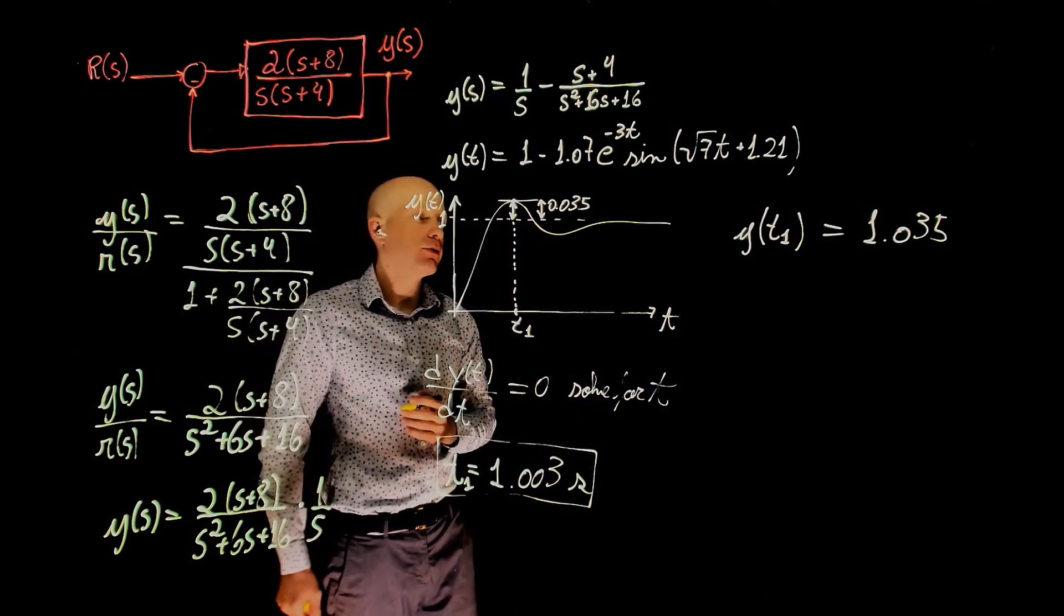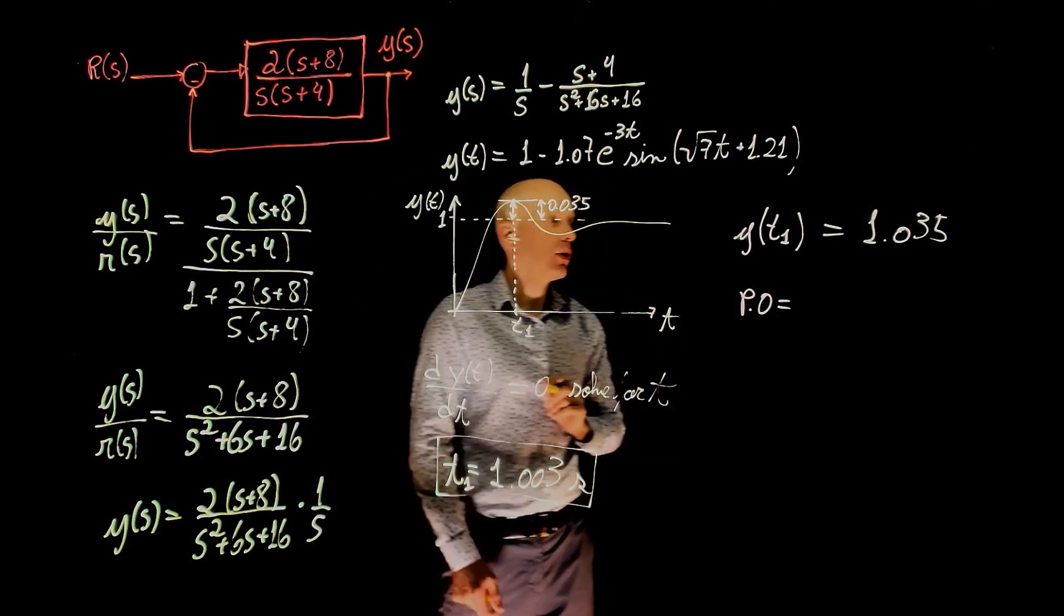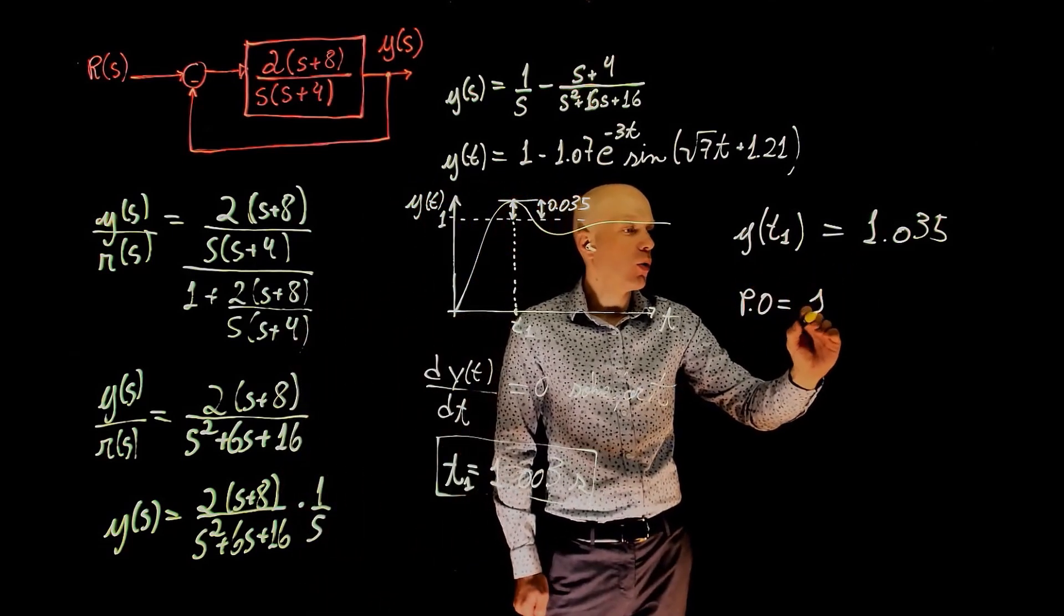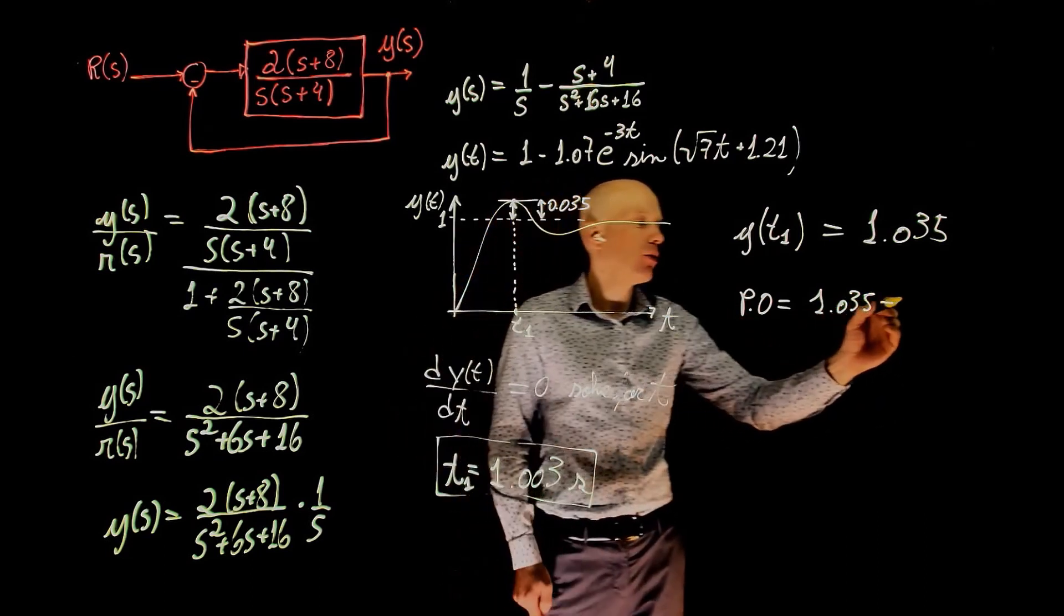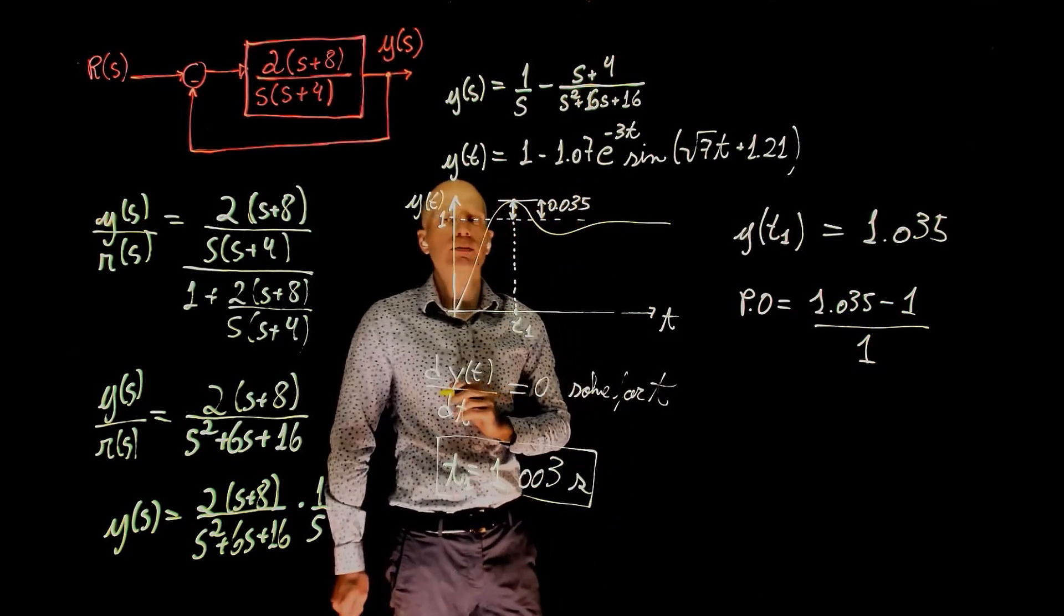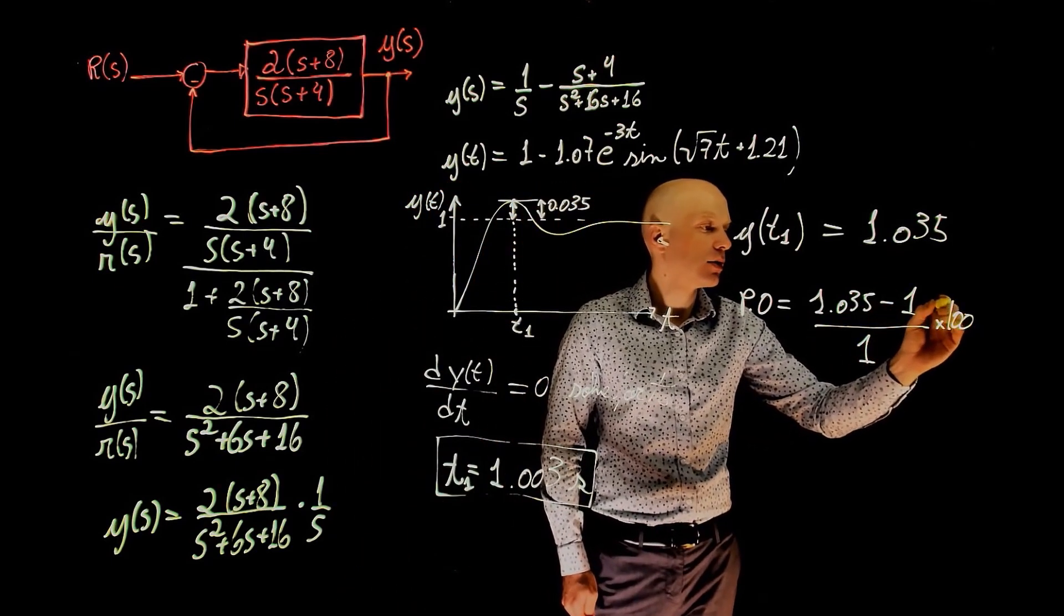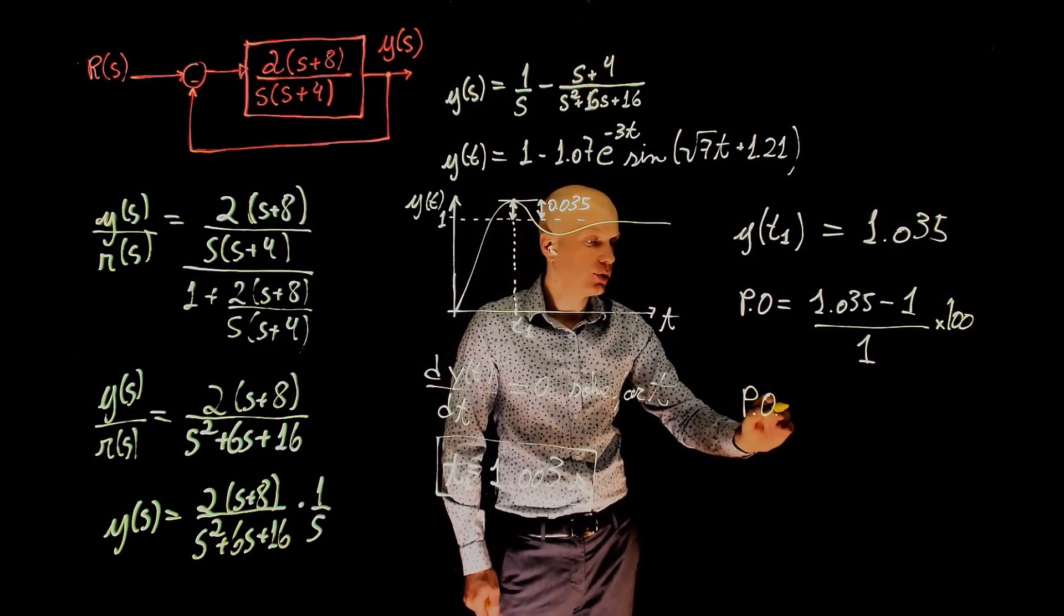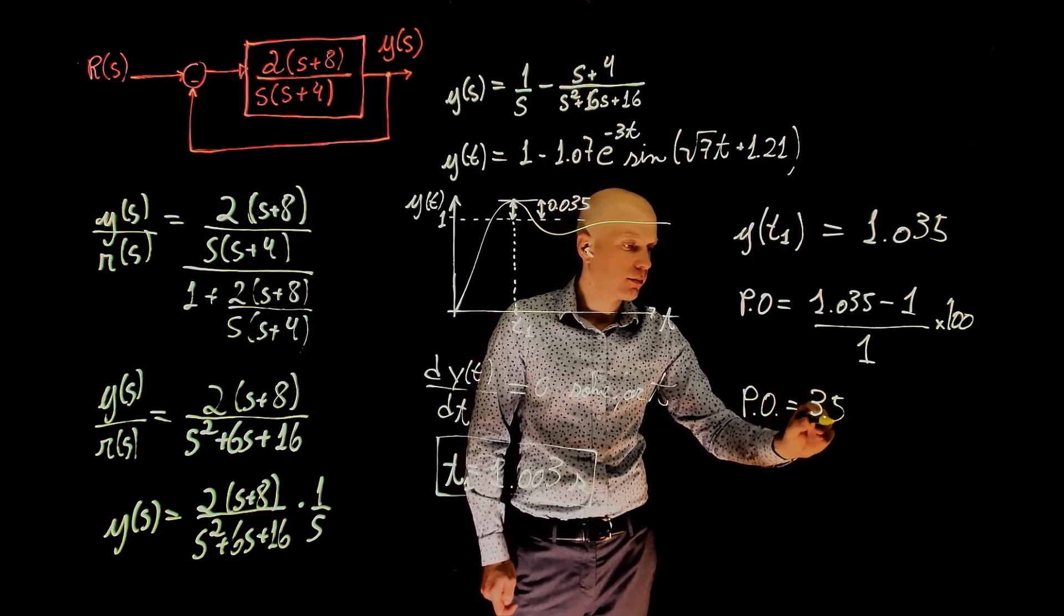What is our percent overshoot? Well, the percent overshoot is how far it goes beyond the final value, 1. So that is 1.035 minus the final value, 1, divided by the final value, which is 1, times 100, if you want to express this in percent. So the percent overshoot is 3.5%.